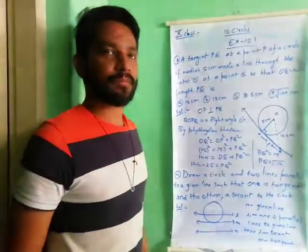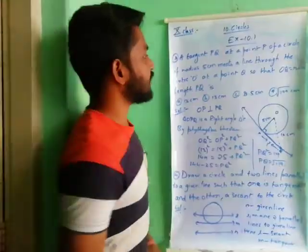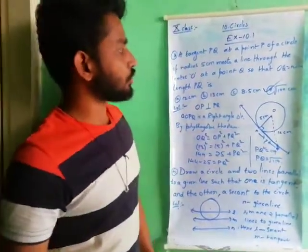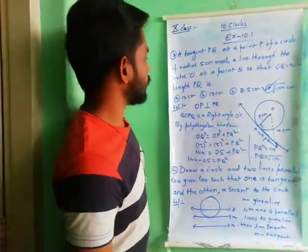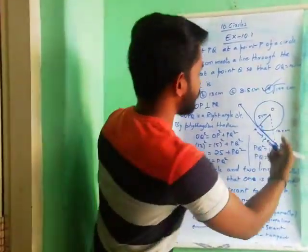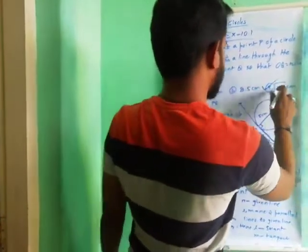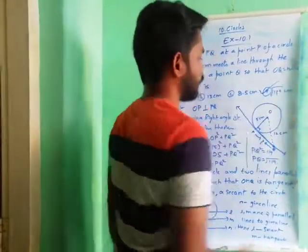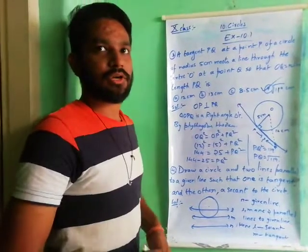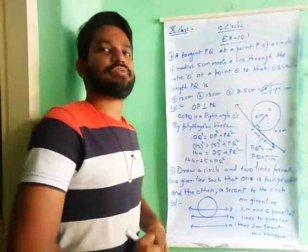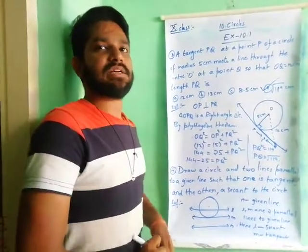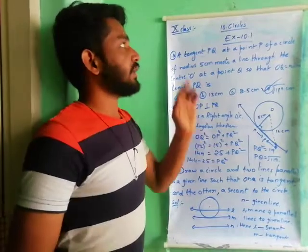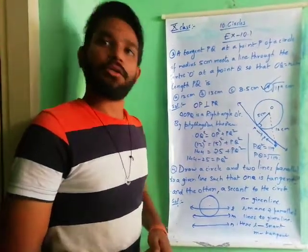So the answer to the third problem is option D: √119. In the next video we will discuss some introduction to Exercise 10.2.